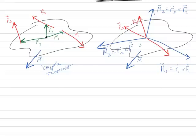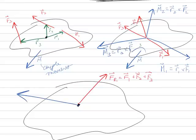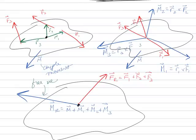Now that I've replaced all these forces with their couple moments, all the forces are coming out of the same spot. So now I can combine the forces into a new resultant force FR equal to F1 plus F2 plus F3. I can add all the moments together — some resultant moment equal to M plus M1 plus M2 plus M3. This resultant moment is a free vector, so I can move it along its line of action if I need to.